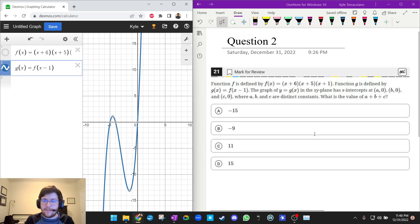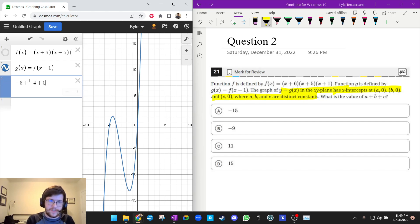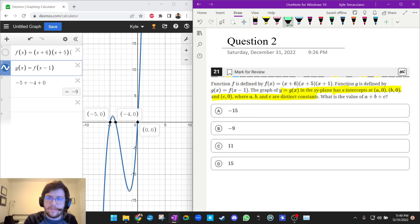And it wants to know the x-intercepts: negative 5, negative 4, and 0. Okay, now it wants us to find a+b+c where a, b, and c are the constants which represent the x-coordinates of the x-intercepts. So we're just going to type in -5 + -4 + 0. And you see we get negative 9, which is answer choice B. All right, very good. Let's do one more question.